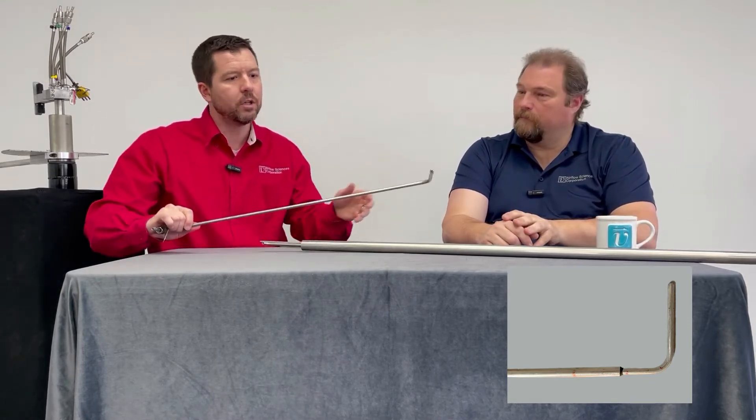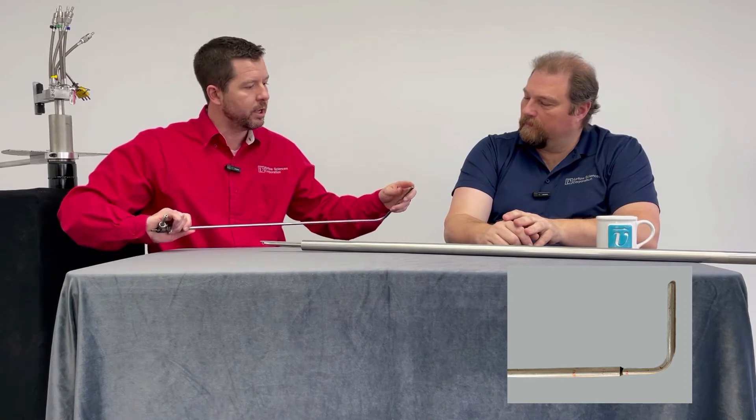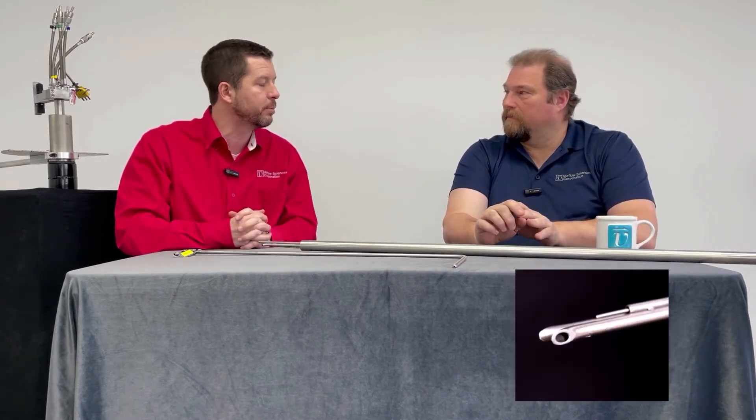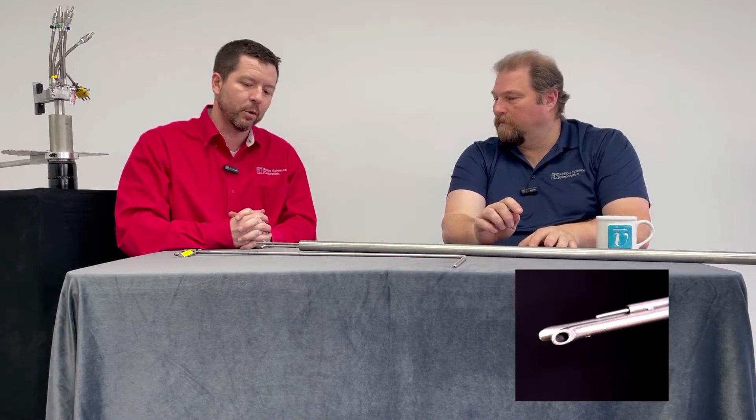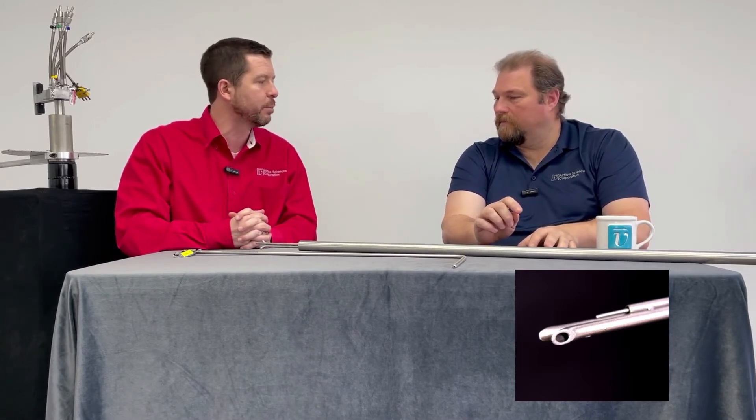The relatively small hole on the tip can be prone to pluggage. So for industrial situations where you might have particulate, you'd want a different style probe, and that's where a probe like the S-type probe or reverse impact probe comes into play because it can be more resistant to pluggage from that small particulate.